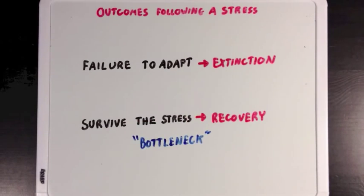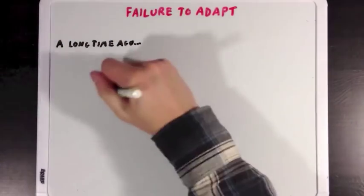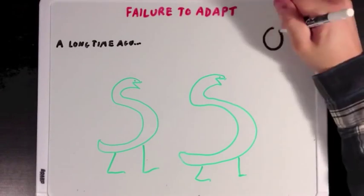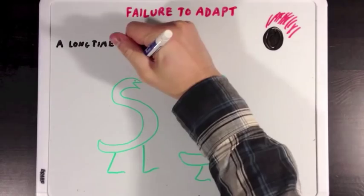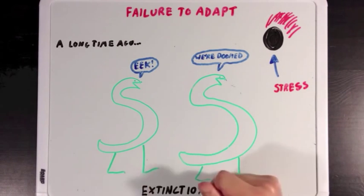So let's look at an example of each outcome. First we'll look at an example where the population couldn't adapt. Now we all know that a long time ago dinosaurs ruled the earth. Scientists think that one day a giant meteor came crashing down to the earth and completely changed the environment that the dinosaurs were living in. In this case the meteor and the changes to the environment that it made was the environmental stress, and the dinosaurs just couldn't cope with the change and they all died and went extinct.